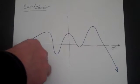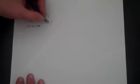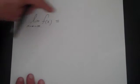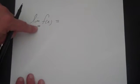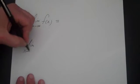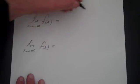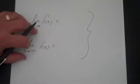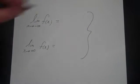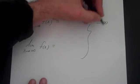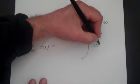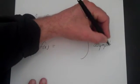End behavior with exponential functions is actually very easy. We set up the limit of f(x) as x goes to negative infinity — this tells us what happens when x is very large and negative — and then the limit as x goes to positive infinity of f(x). What makes this particularly easy is that you only have three possible answers: negative infinity, positive infinity, or the value of the asymptote. And that's it.